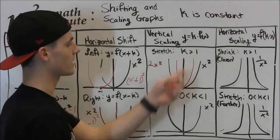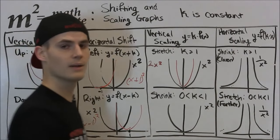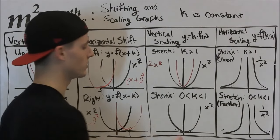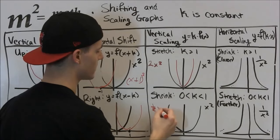Now, if we had k was between 0 and 1, that means that it's a fraction. That means it can't be 0, it can't be 1. So let's talk about 1 half times x squared.